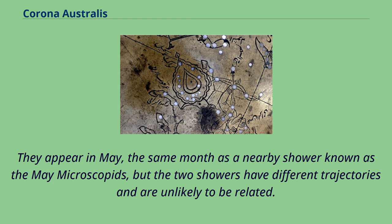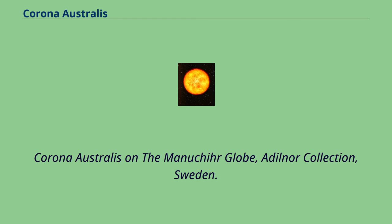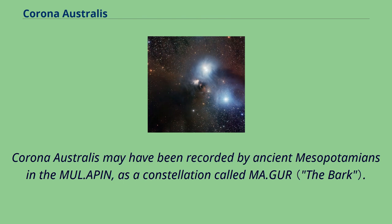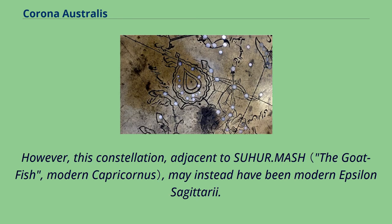Corona Australis on a miniature globe from the Dähner collection, Sweden. Corona Australis may have been recorded by ancient Mesopotamians in the MUL.APIN, as a constellation called MA.GUR. However, this constellation, adjacent to Suhur.Mash, may instead have been modern Epsilon Sagittarii. As a part of the southern sky, MA.GUR was one of the 15 stars of Ea.